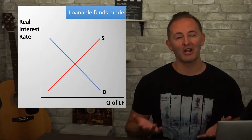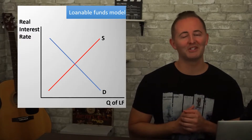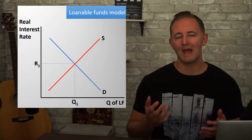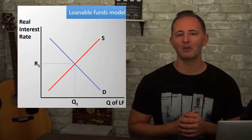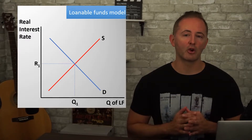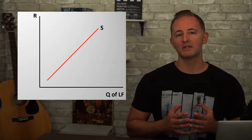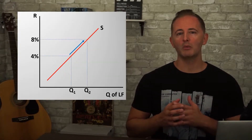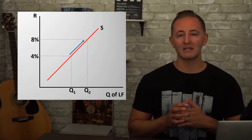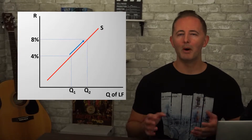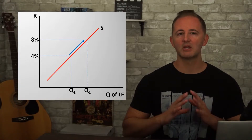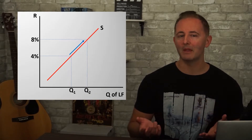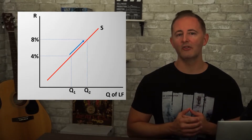The rest of our model looks refreshingly simple — it's just another supply and demand model, with an upward sloping supply curve and a downward sloping demand curve. The supply curve represents savers and lenders. We normally think of banks as lenders, which is true, but more importantly it also represents all the people who have saved their money at the bank.